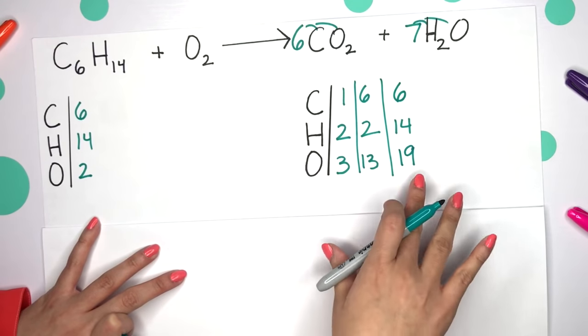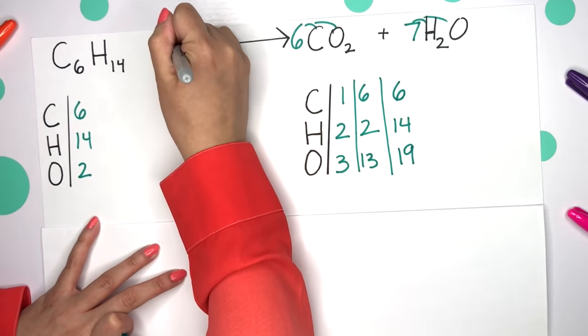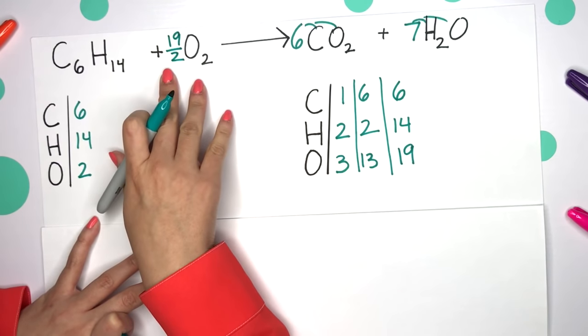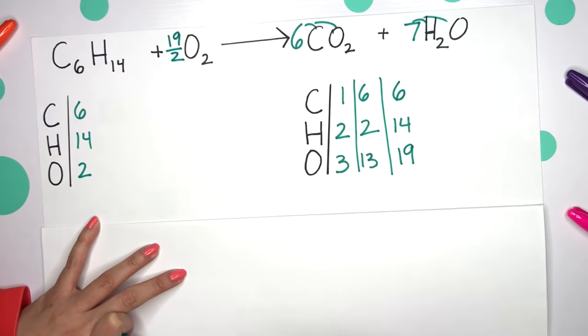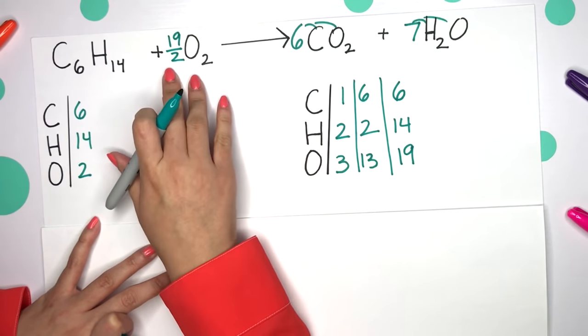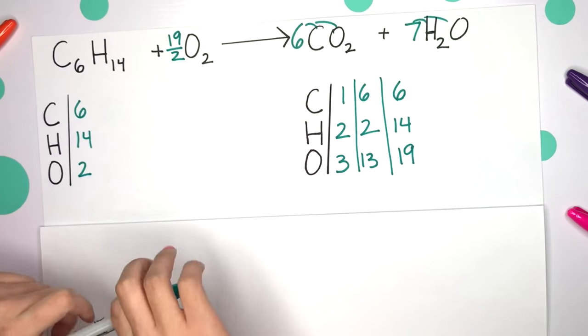What we're going to do is since this side has 19, then I'm going to place 19 halves here. That's where the fraction comes in. So whatever odd number you have, you're going to put a two underneath. And this is what we're going to do to eliminate that fraction as a whole.